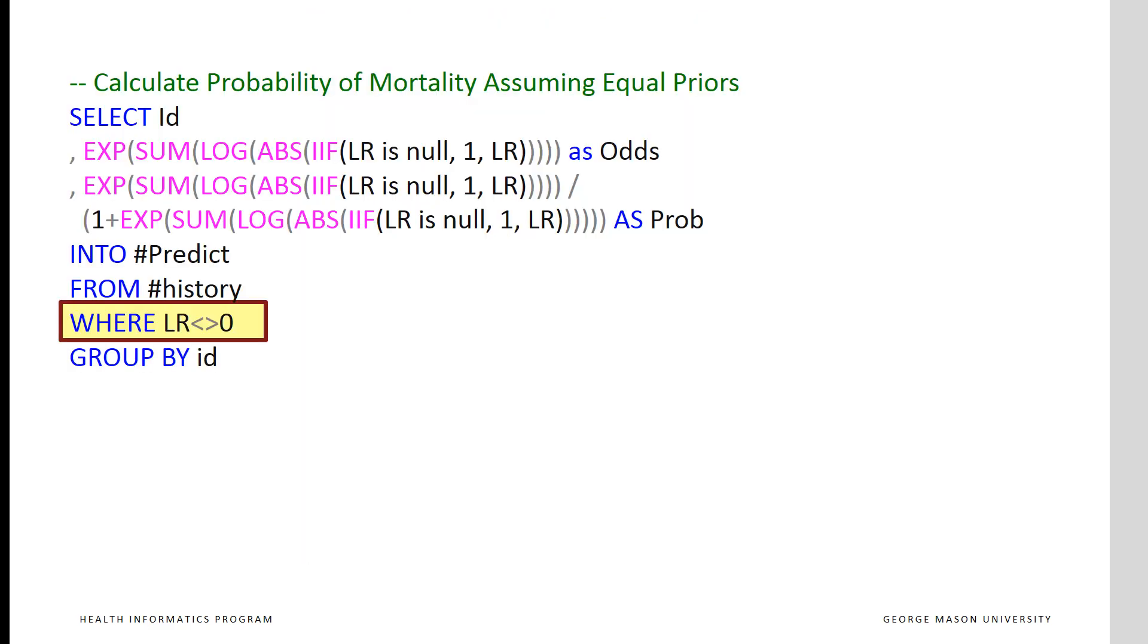Note that no predictor is allowed to have a likelihood ratio of 0. Log of 0 is infinity and not defined in the computer. A likelihood ratio of 0 means that the outcome never happens, not even a minute chance of occurring when the predictor is present. We controlled for this situation when we created the likelihood ratios. We modified our likelihood ratios of 0 to be a number close to 0 but not 0, allowing minute chances.